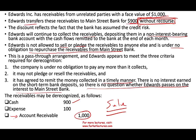Under US GAAP, the entry is a little bit different. If you really want a more detailed example, go to my Chapter 7 Intermediate Accounting lectures where I have detailed examples of how to do this under US GAAP. The entry is a little more involved — this was just a simplification.